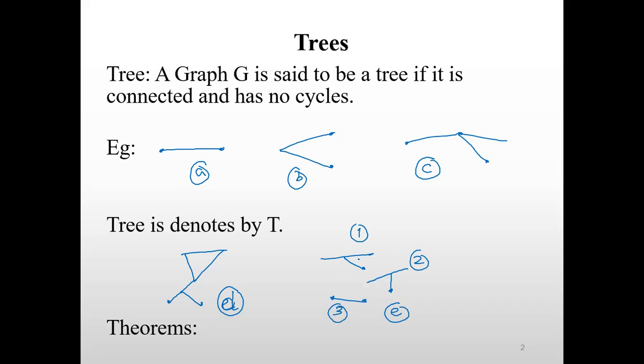So each one of the components can be considered as a tree. Hence, this can't be considered as a tree, but it can be considered as a forest, which consists of tree 1, tree 2, and tree 3. So this is the example for the forest.